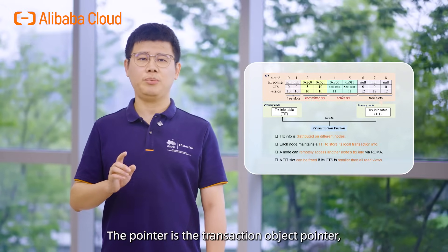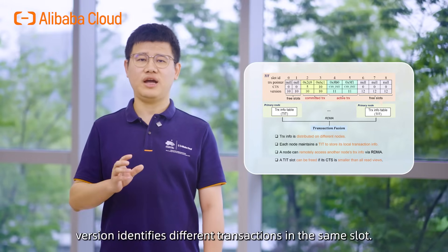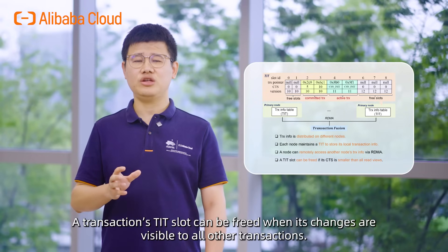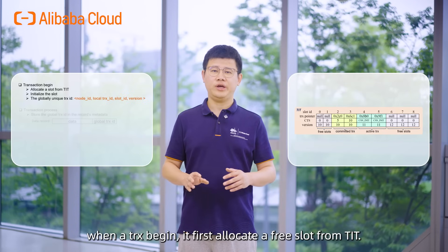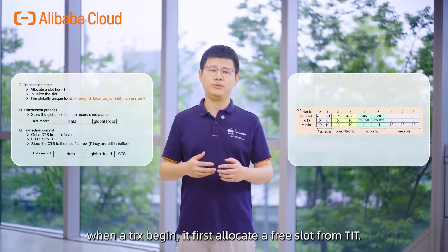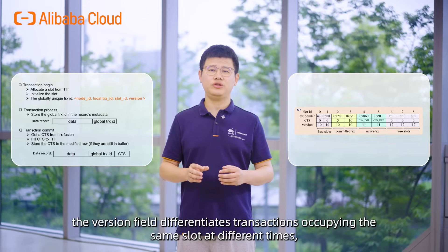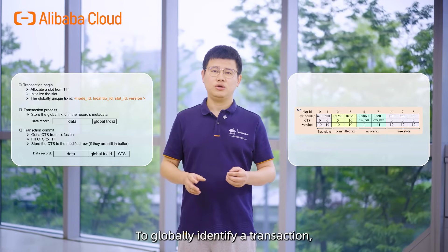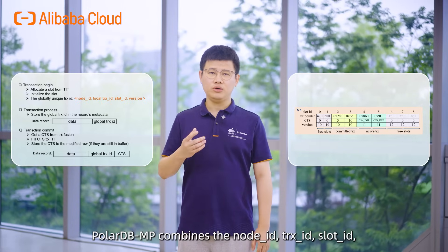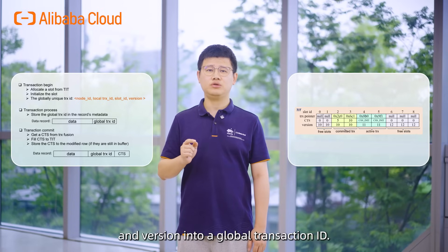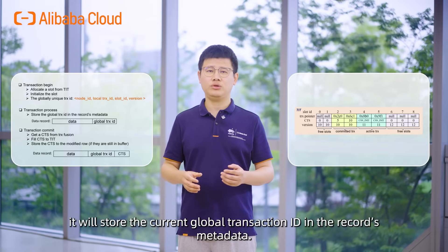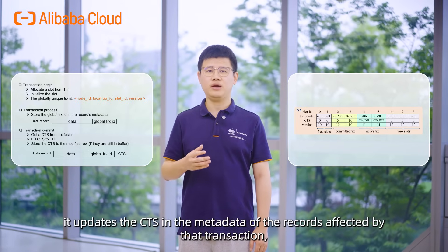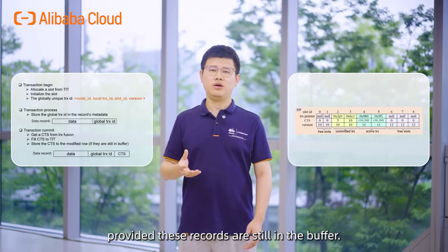The pointer is the transaction object pointer. CTS marks the transaction's commit timestamp. Versions identify different transactions in the same slot. The TIT slot can be freed when the changes are visible to all other transactions. When a transaction begins, it first allocates a free slot from TIT. As TIT slots can be reused, the version field differentiates transactions occupying the same slot at different times, incrementing with each new transaction. To globally identify a transaction, PolydBMP combines the node ID, transaction ID, slot ID, and version into the global transaction ID. When a transaction modifies a record, it stores the current global transaction ID in the record's metadata. When committing, it updates the CTS in the metadata of the records affected by that transaction, provided those records are still in the buffer.